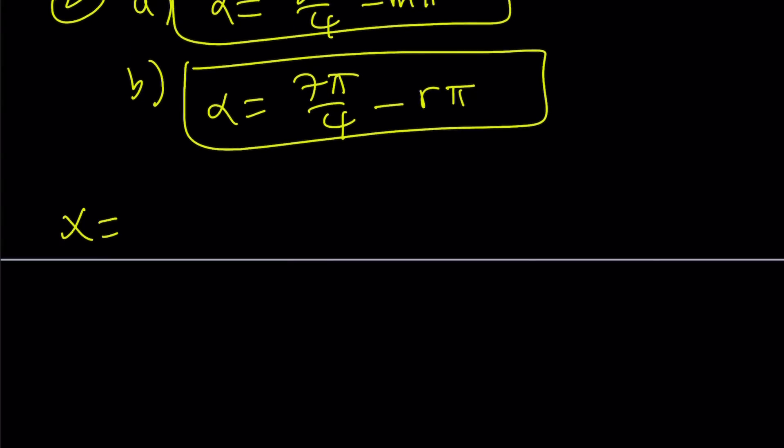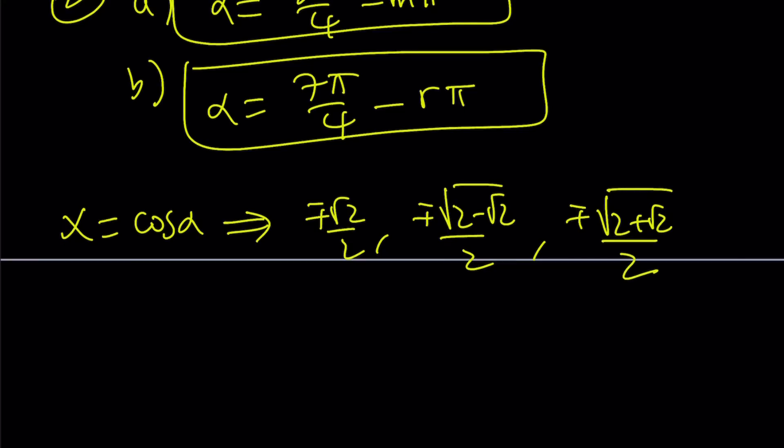Obviously, x is equal to cosine of alpha. From here, we should be getting for x plus minus root 2 over 2, plus minus square root of 2 minus root 2 over 2, and plus minus square root of 2 plus root 2 over 2. And that gives you six solutions.